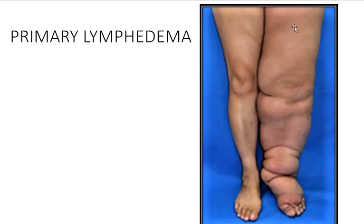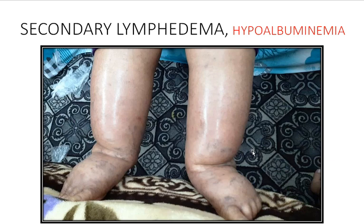This is another case of primary lymphedema affecting the lower limb, involving the thigh, leg, and foot. In bilateral cases, please consider secondary lymphedema, hypoalbuminemia, static edema, cardiac edema, renal edema, and hepatic edema.